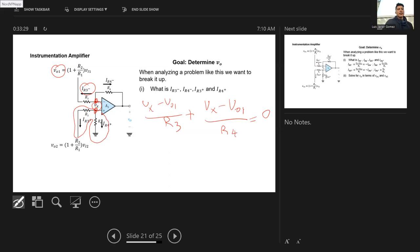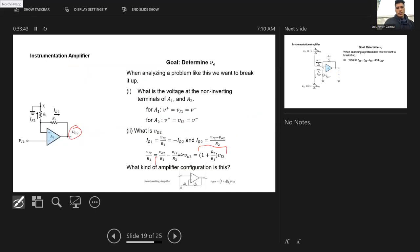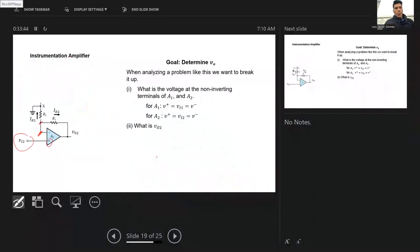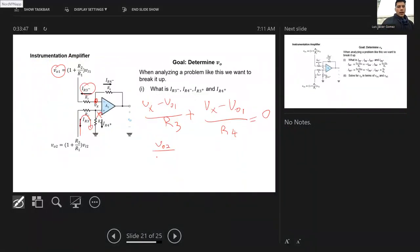Exactly. Basically here, just as you can recollect, no current goes into here. So whatever flows through here has to flow through there. So you can just do voltage division. You get that VO2 divided by R3 plus R4 times R4 equals VX.